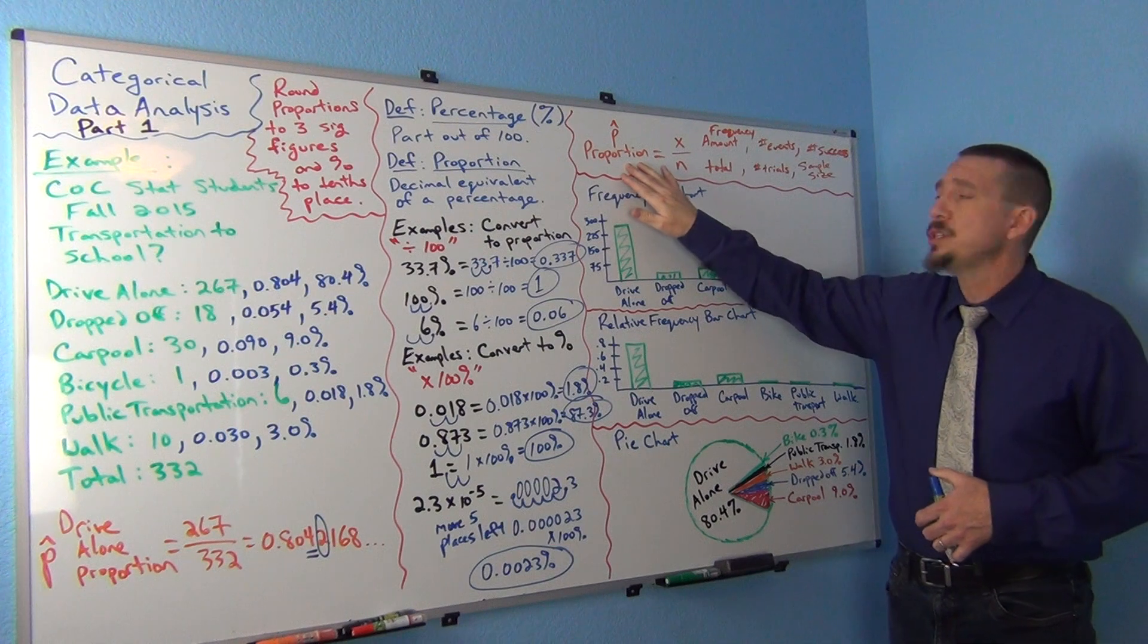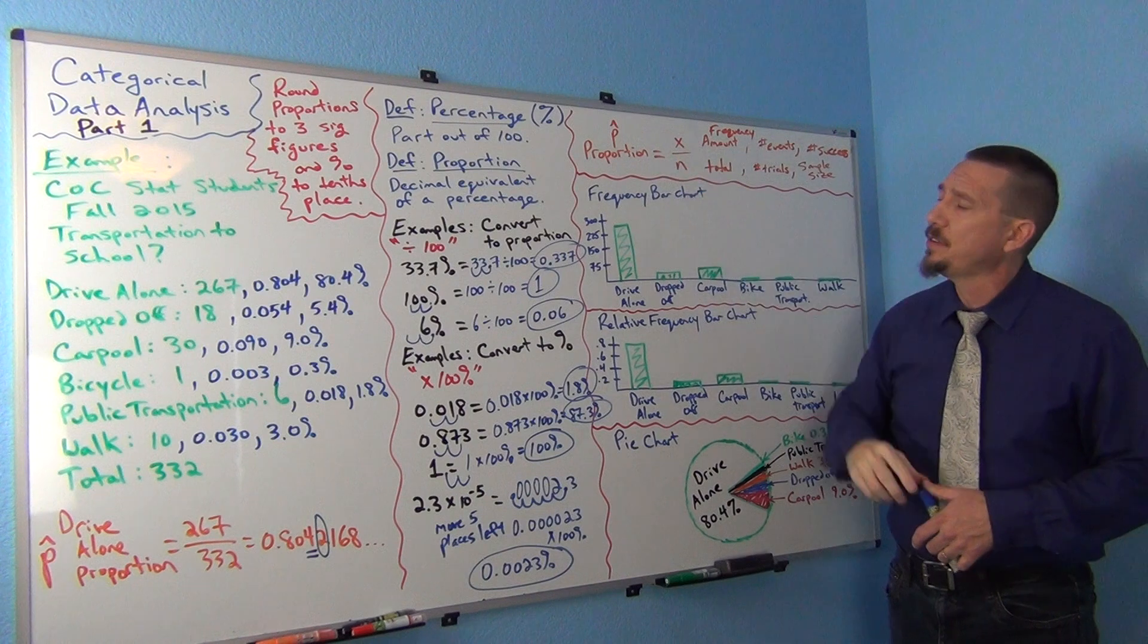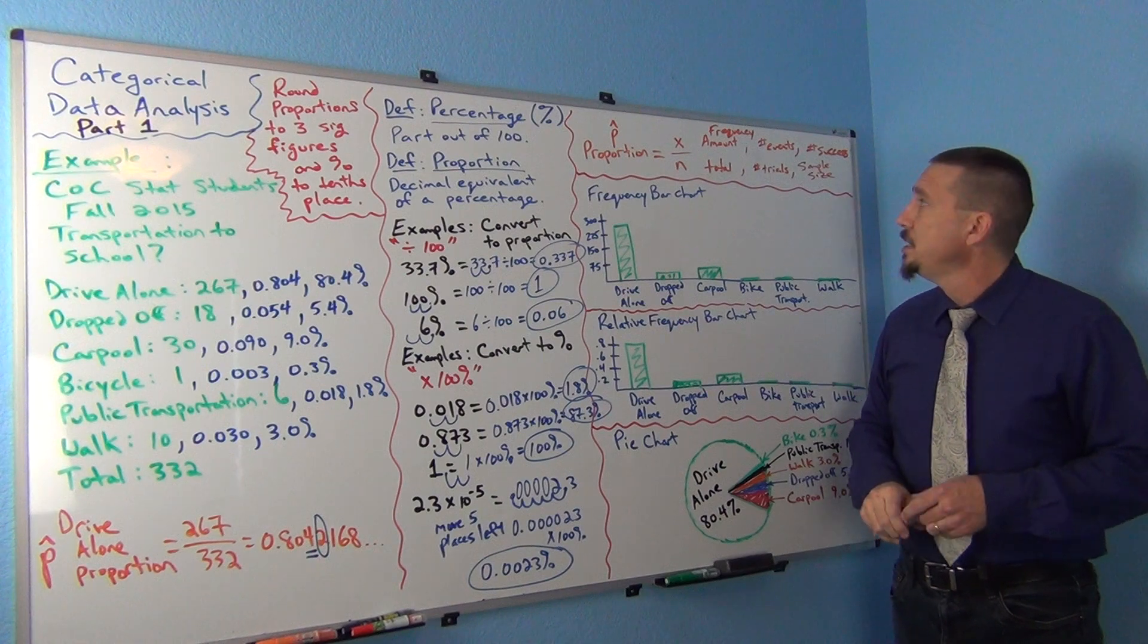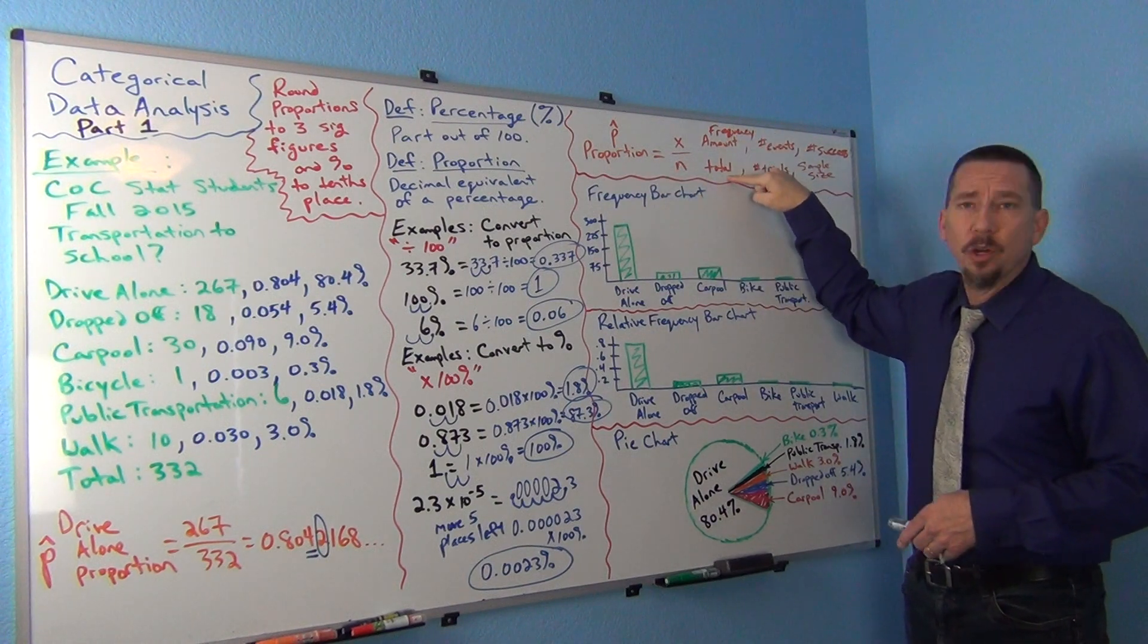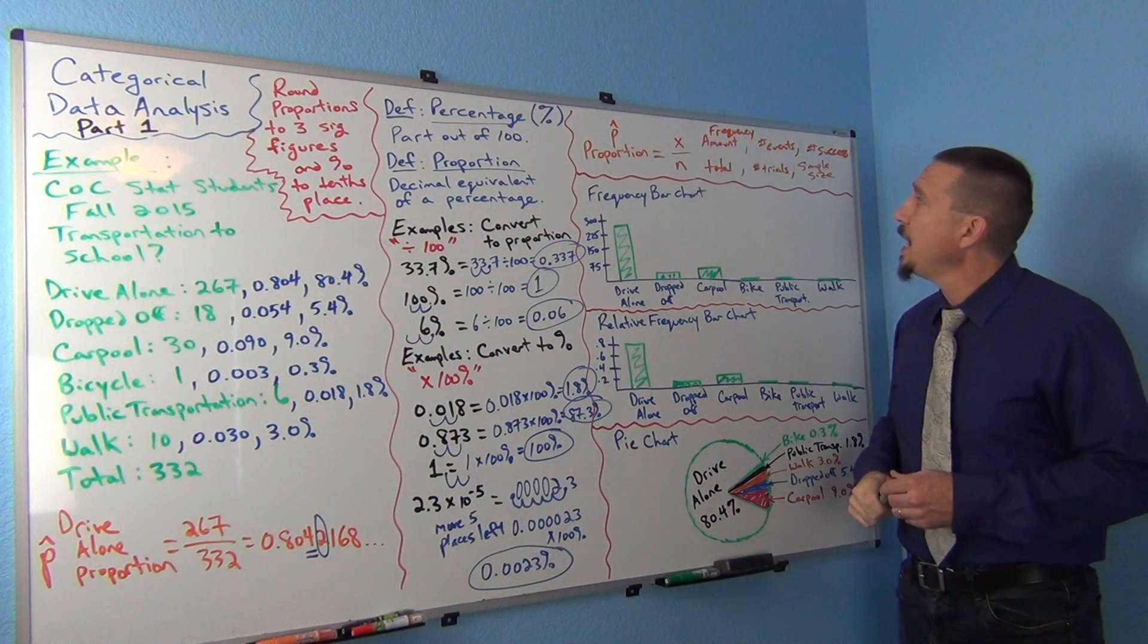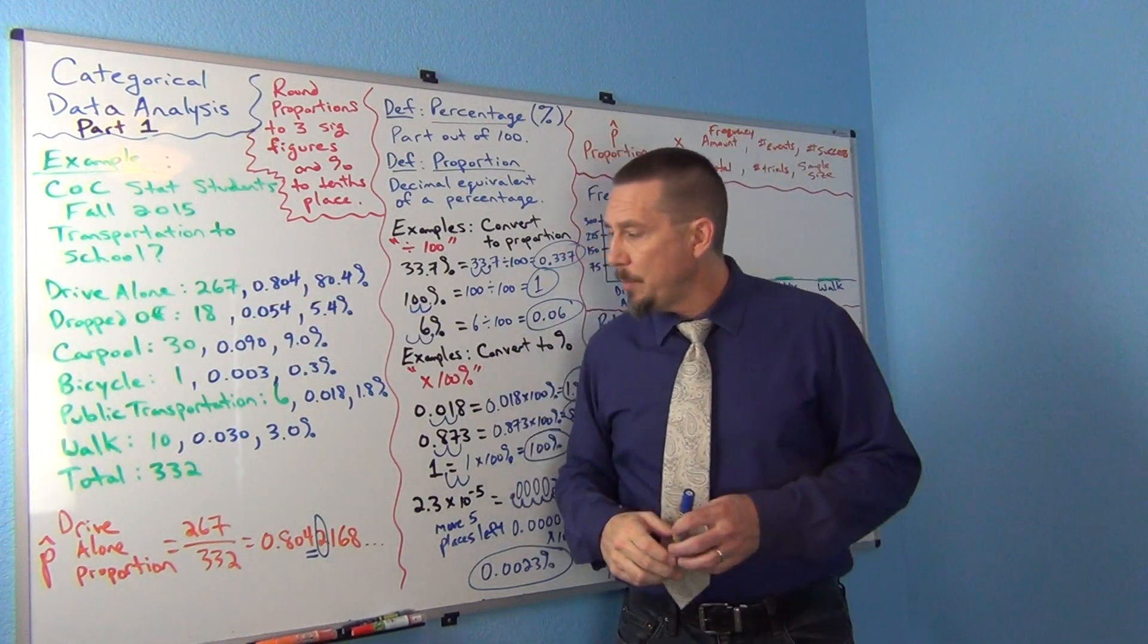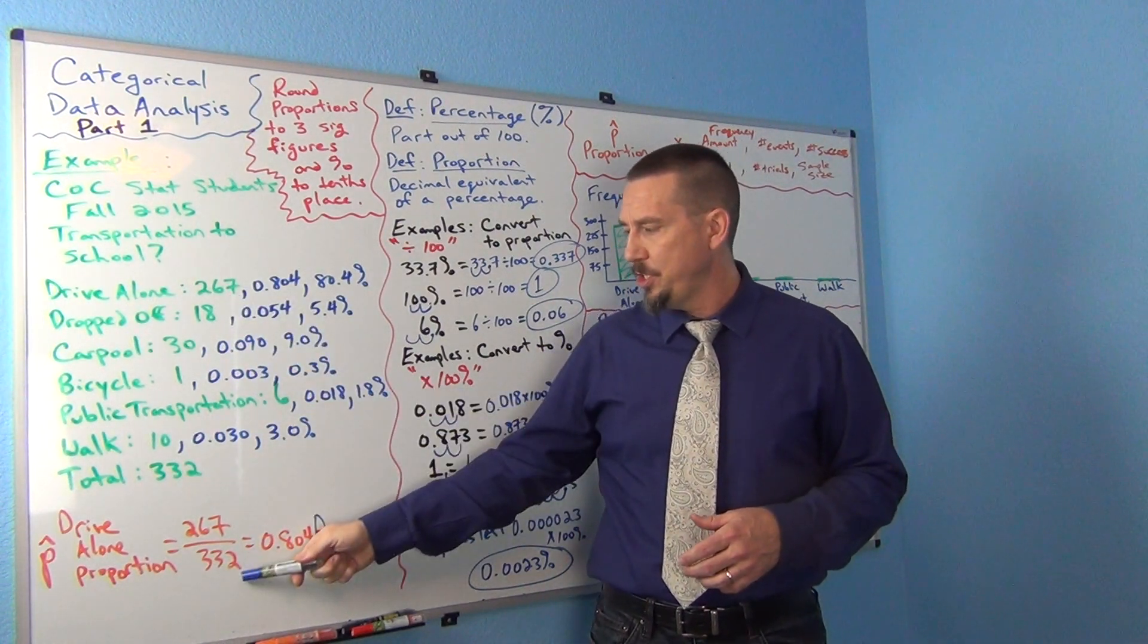Proportion is usually denoted by a p hat. They take a p and they put this little hat on top of it. That's a common letter in stats for a decimal proportion from categorical data. So proportion is equal to the amount divided by the total. Or sometimes you'll see this formula x over n. So if I'm trying to figure out the proportion that drive alone, I'm going to do 267 divided by the total, 332.